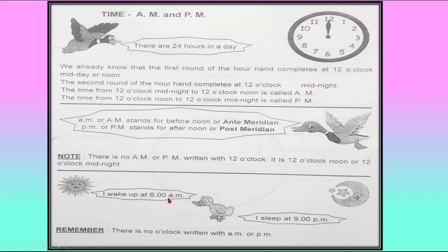I wake up at 6 AM with sunrise and I sleep at 9 PM when the moonlight is on. Remember, there is no 'o'clock' written with AM and PM. You write either 1 PM or 1 o'clock, but never 1 PM o'clock. Bear that in mind.